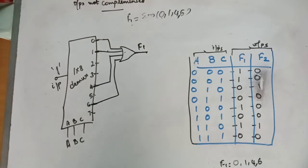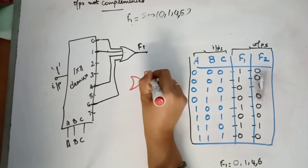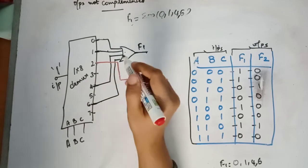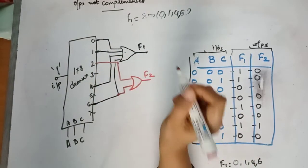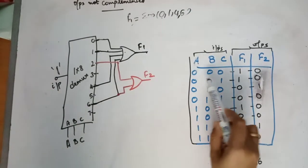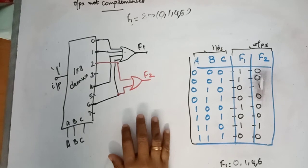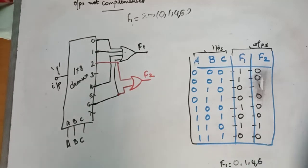For F2, we use another OR gate with inputs connected to demux outputs 2 and 6. When ABC is 0,1,0, F2 will be 1 and F1 will be 0. When ABC is 0,0,0, F1 will be 1 and F2 will be 0. This truth table is satisfied using this circuit. This is how you implement an SOP using a demux when outputs are not complemented.